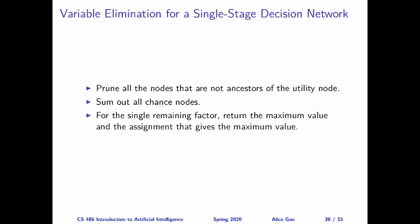Here is the variable elimination algorithm for a single stage decision network. It's fairly simple. First of all, we want to prune all the nodes that are not ancestors of the utility node. The reason for this is that the utility node is only influenced by its ancestors. So if some node is not an ancestor of the utility node, it's irrelevant. It does not affect our happiness. So the first step just says let's prune all the irrelevant nodes.